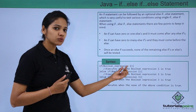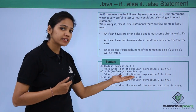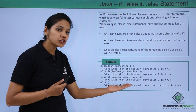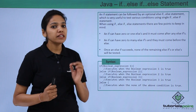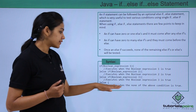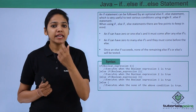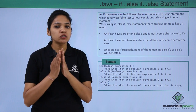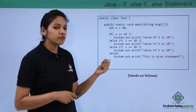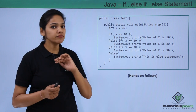If the first condition is true, execute that block. Else-if, check the second condition. Else-if, check the third condition. Else-if, check the fourth condition, and so on. If none of the conditions are satisfied, finally execute the else block. Remember, the last else block does not contain any condition.